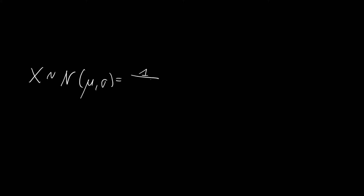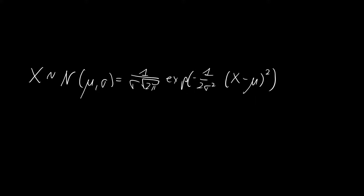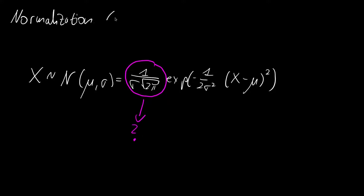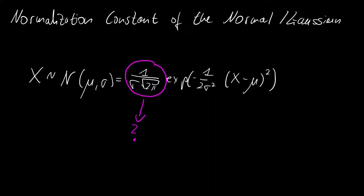You have a random variable that is distributed according to a normal distribution. You know the probability density function. Where does this normalization constant come from? Welcome to this video where we are going to derive this.